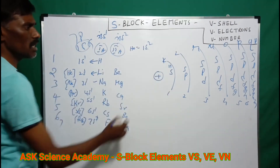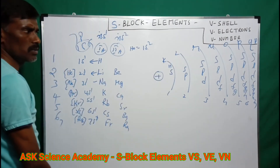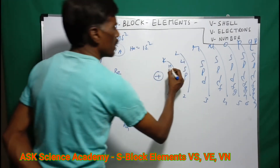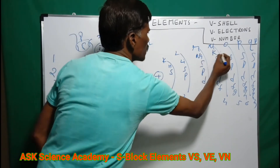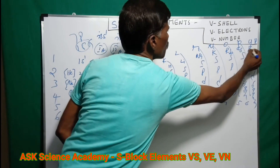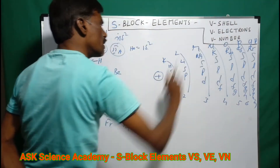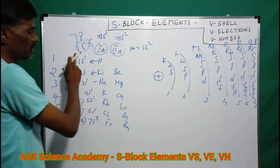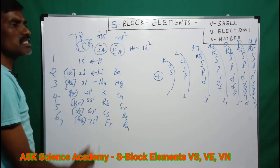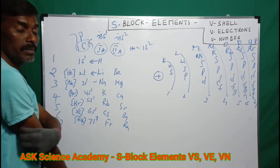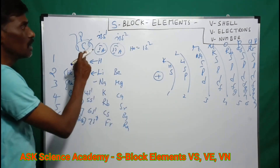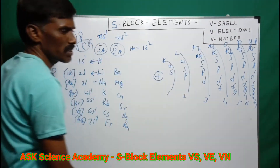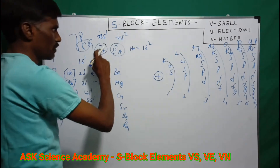The elements per shell are: Hydrogen 1s1 is in the first shell; Lithium 2s1 is in the second shell; and so on — Hydrogen, Lithium, Sodium, Potassium, Rubidium, Cesium, Francium. The general configuration is ns1, where 'n' is both the period number and the shell number.